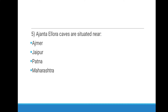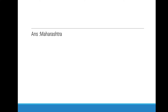Fifth question: The Ajanta and Ellora caves are situated near which place? Options are Ajmer, Jaipur, Pune, Maharashtra. Right answer is Maharashtra.